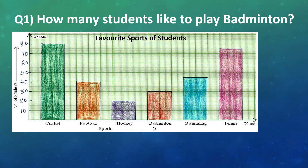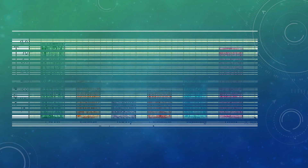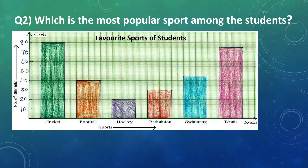Question number 1: How many students like to play badminton? Here, we can see that the height of the bar that shows the sport badminton reaches up to the scale 30. Therefore, the answer will be 30 students like to play badminton.